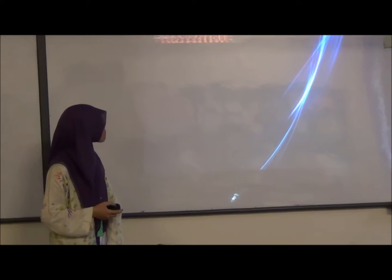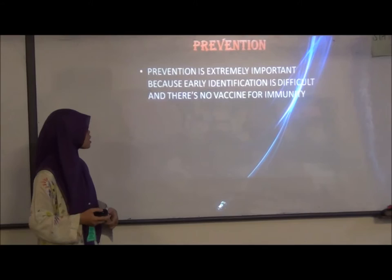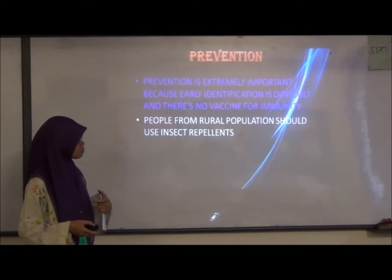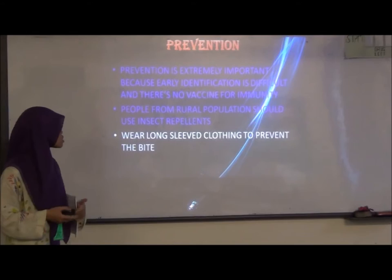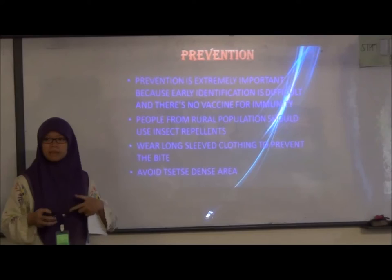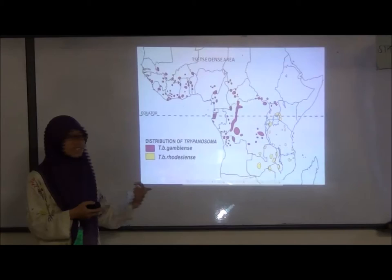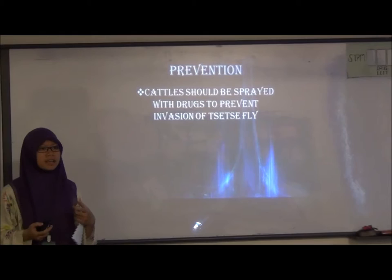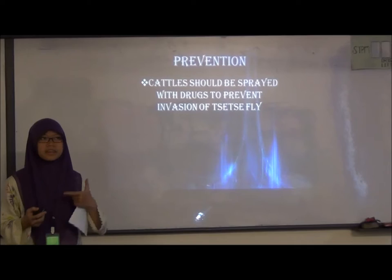Prevention is extremely important because early identification is difficult and there is no vaccine. People from rural populations should use insect repellent and wear long-sleeved clothing to prevent the tsetse fly bite. They should also avoid bushy rural areas, as these are agricultural places where the flies are common.